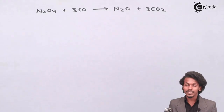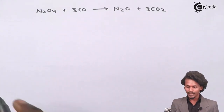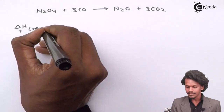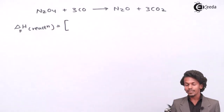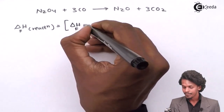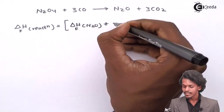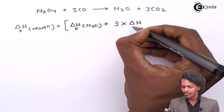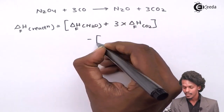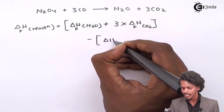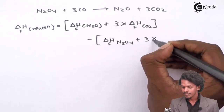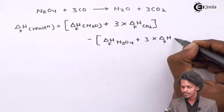We can write the enthalpy of the reaction as: the overall reaction equals the sum of the heat of formation of the products — that is delta HF for N2O plus 3 times delta HF for CO2 — minus the reactants, which is 1 times delta HF for N2O4 plus 3 times delta HF for CO.